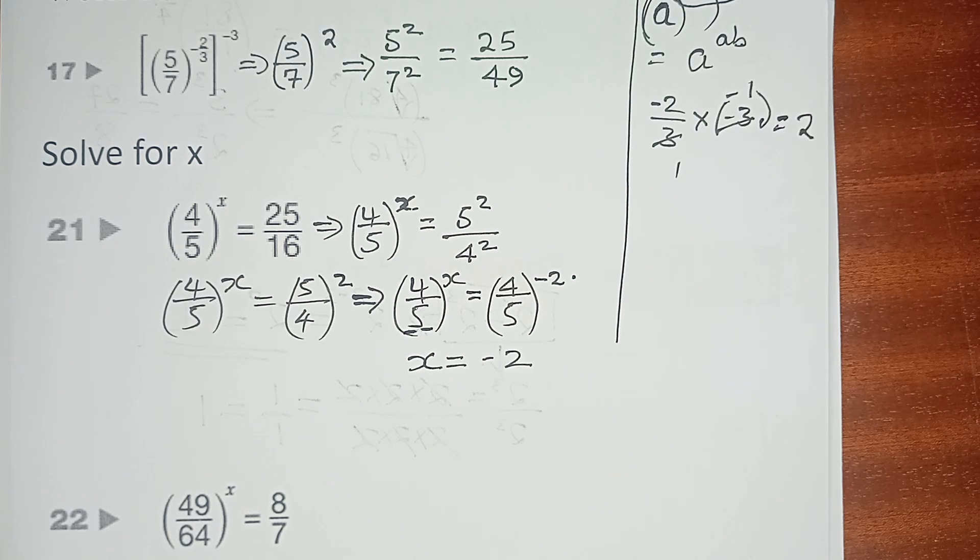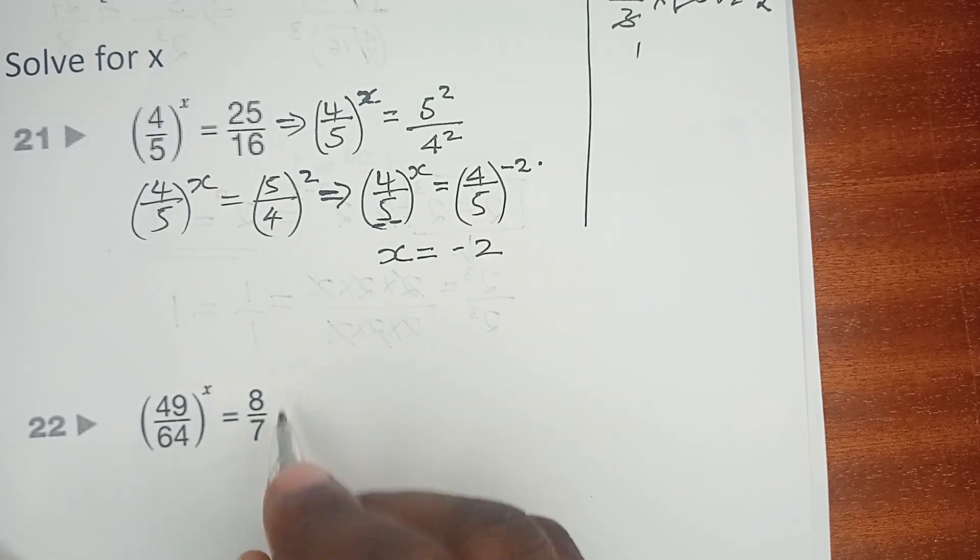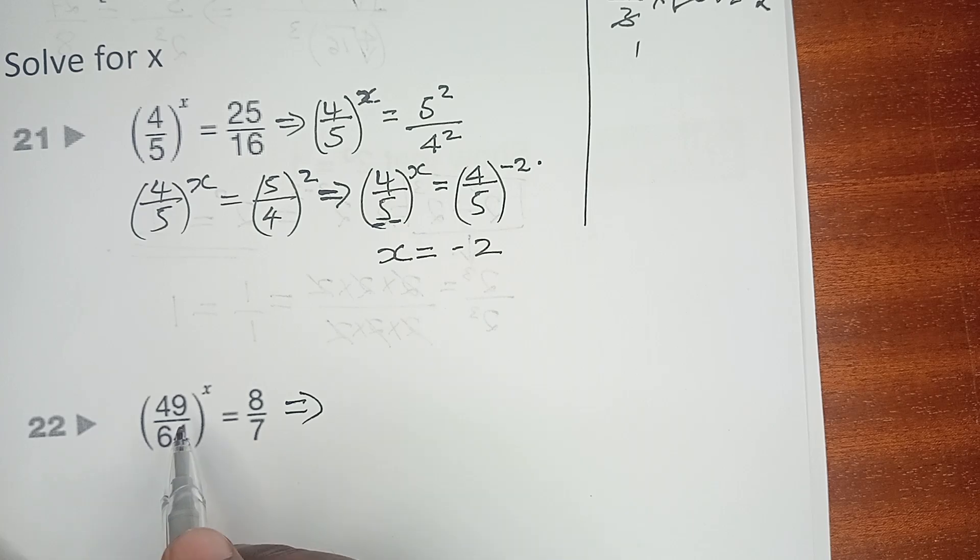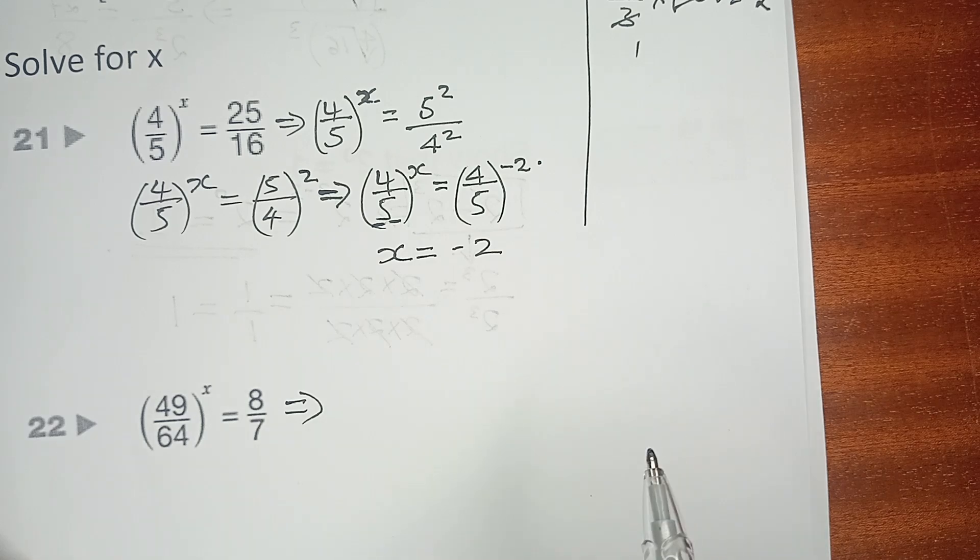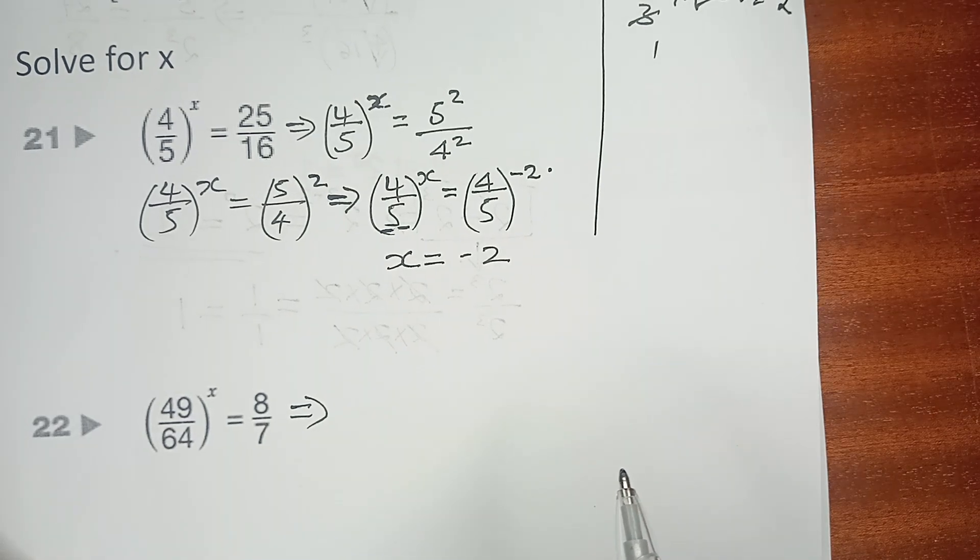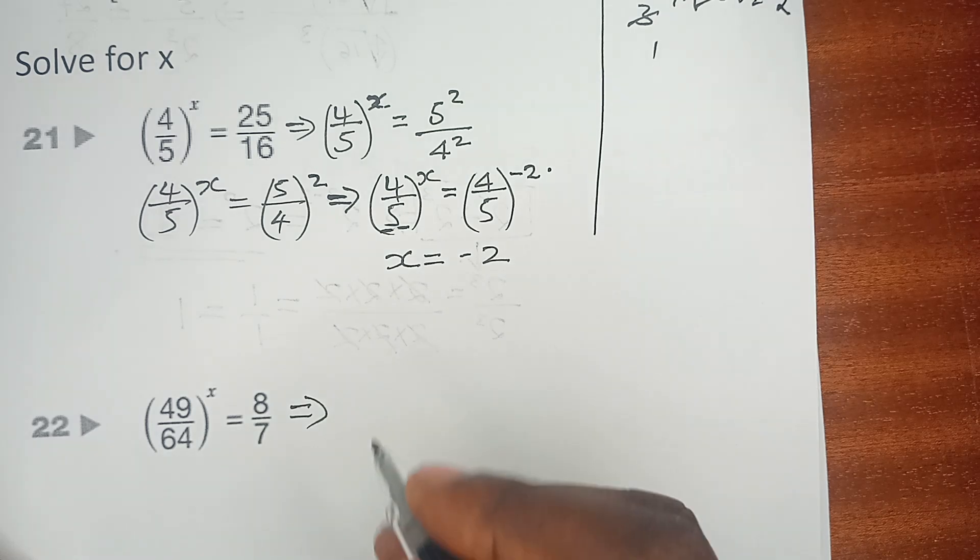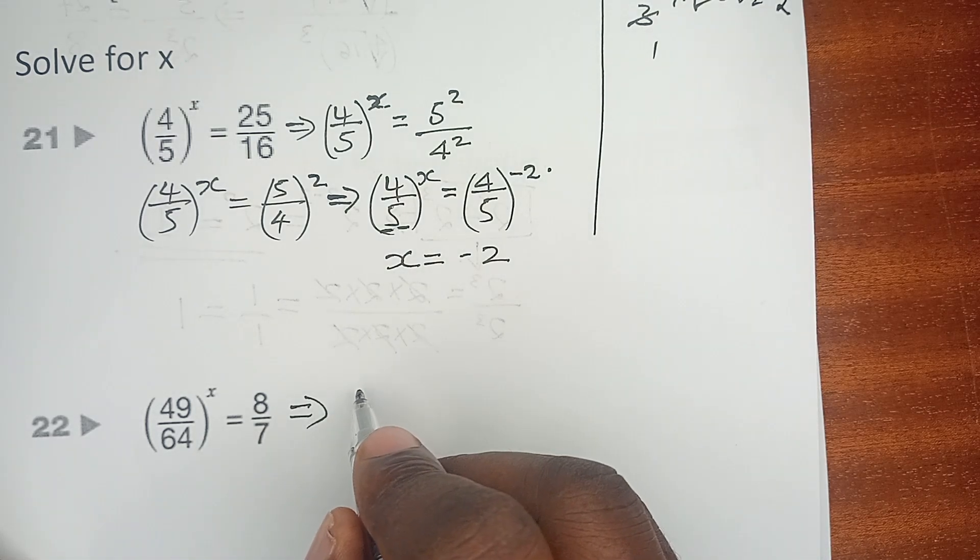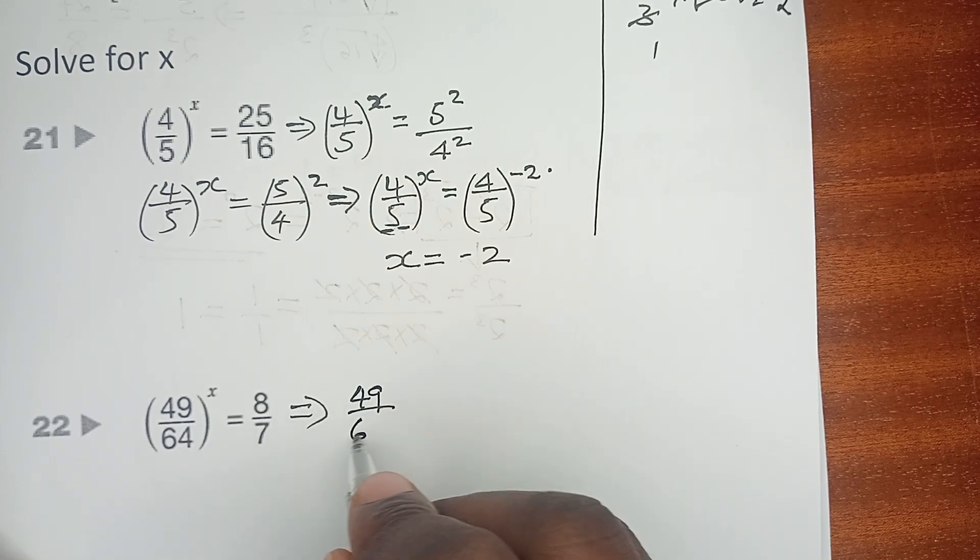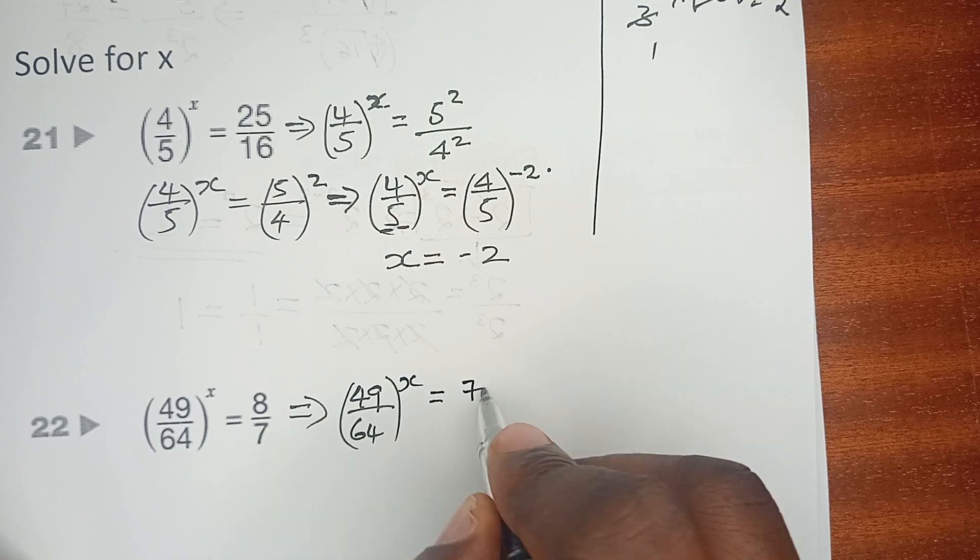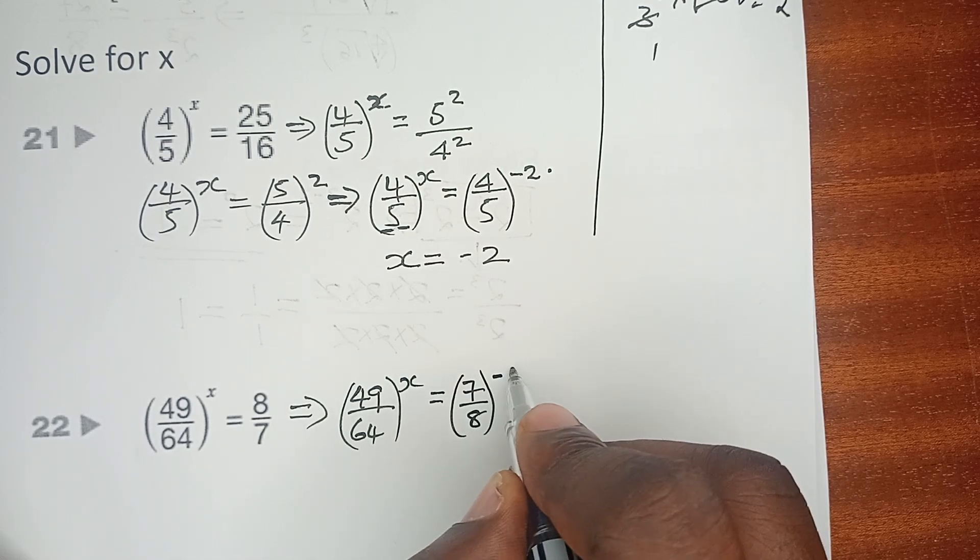We go to question number 22, and we meet (49/64)^X equals 8/7 raised to power 1. Again, 49 is so much related to 7, and 64 is related to 8. So we can start by flipping them over so that we have (49/64)^X equals (7/8)^-1.